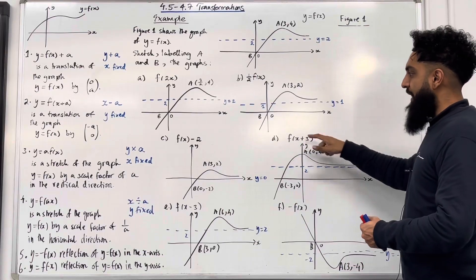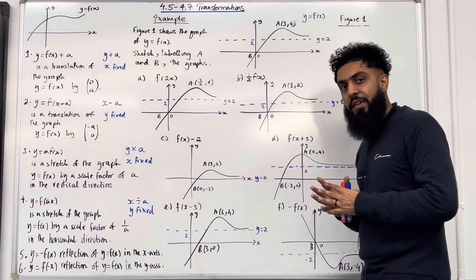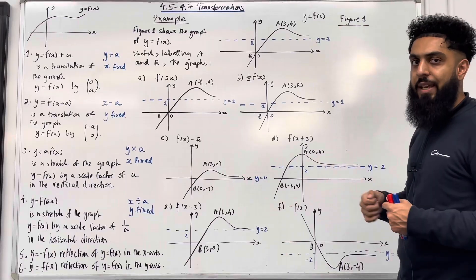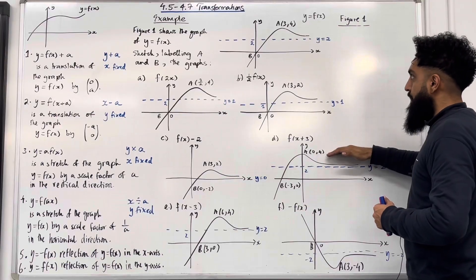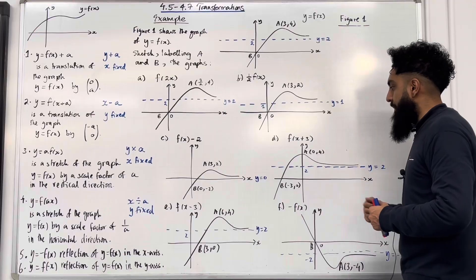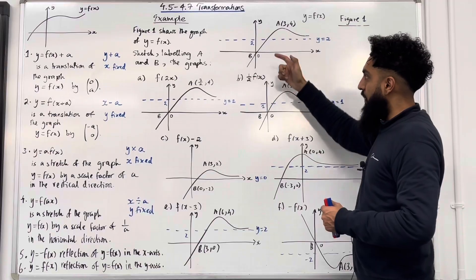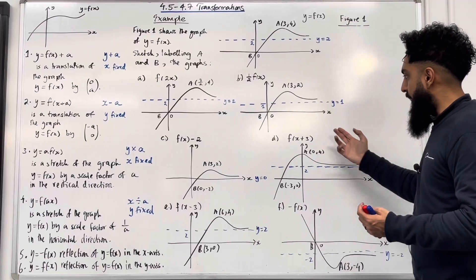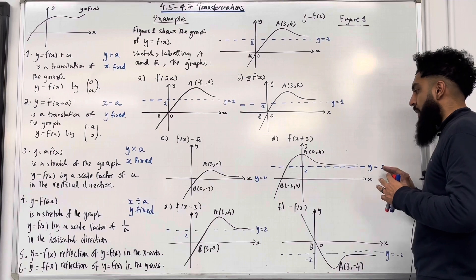Part d: f of x plus 3 inside the bracket. You're taking your whole function and shifting it three units to the left. In other words, you take your x-coordinates, subtract 3, keeping y fixed. So my new coordinate a is now (0, 4) — 3 take away 3 is 0, y stays at 4. My new coordinate b is (−3, 0) — x equals 0, subtract 3 gives −3, y equals 0 remains fixed. This transformation does not affect the asymptote, so the asymptote is still y equal 2.